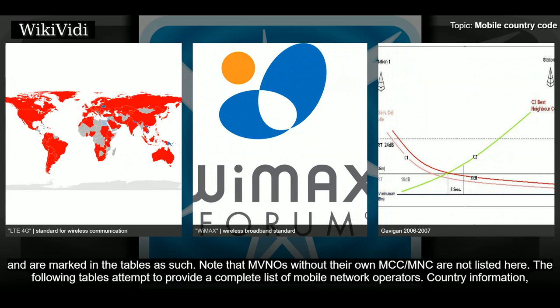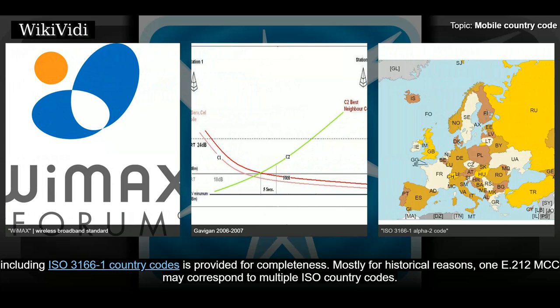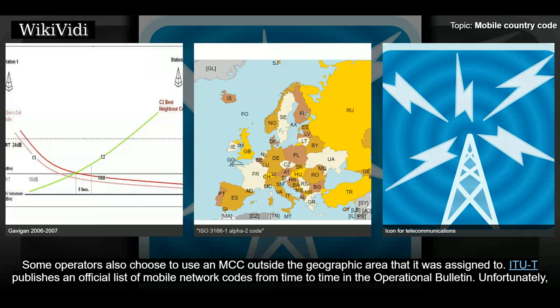Note that MVNOs without their own MCC/MNC are not listed here. The following tables attempt to provide a complete list of mobile network operators. Country information including ISO 3166-1 country codes is provided for completeness, mostly for historical reasons. One E.212 MCC may correspond to multiple ISO country codes. Some operators also choose to use an MCC outside the geographic area it was assigned to.